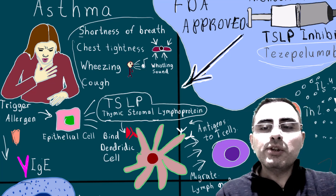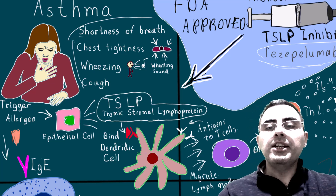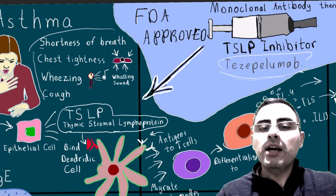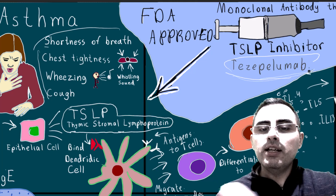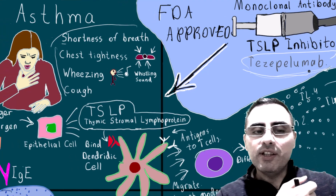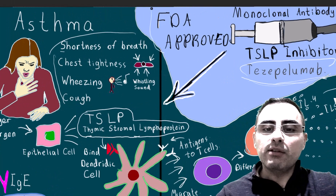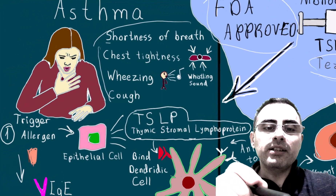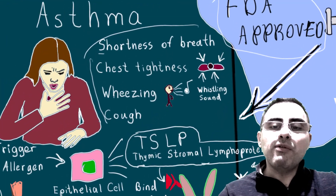Asthma affects more than 300 million people worldwide — it's a huge problem globally. But we have news: a monoclonal antibody therapy called tezepelumab, which was approved by the FDA. We will discuss its mechanism, side effects, and usage. But first, let's discuss asthma itself.